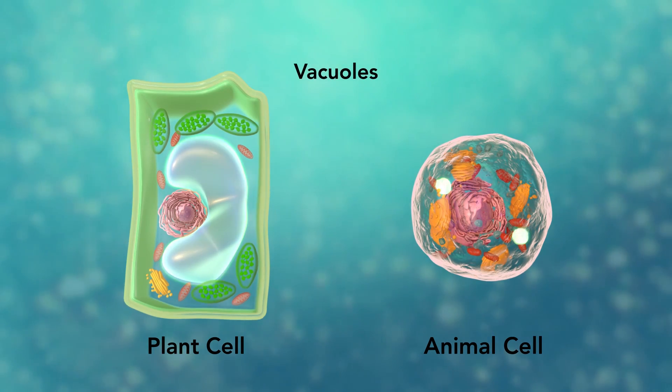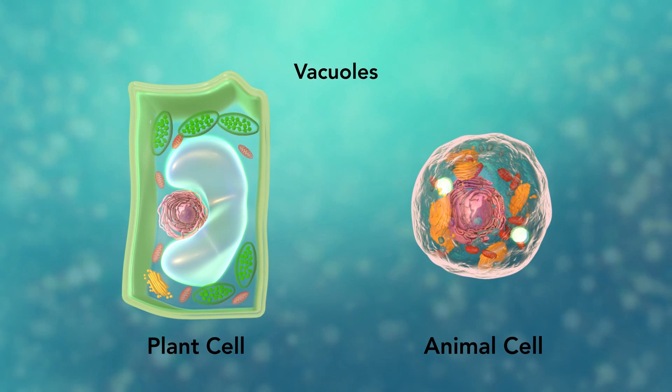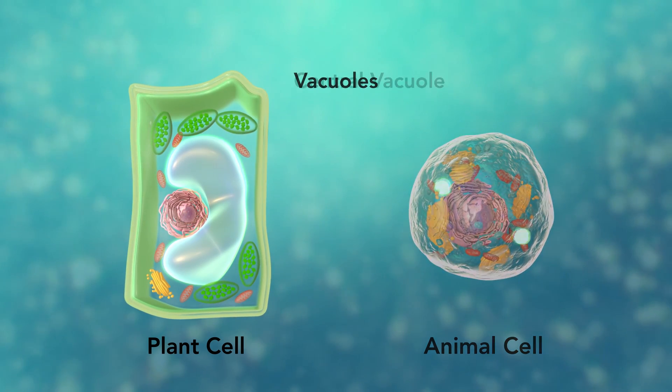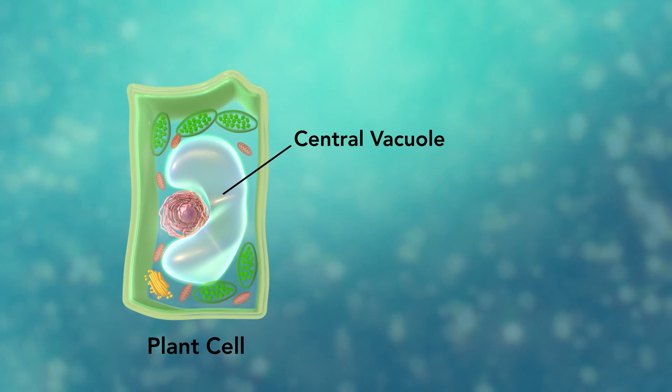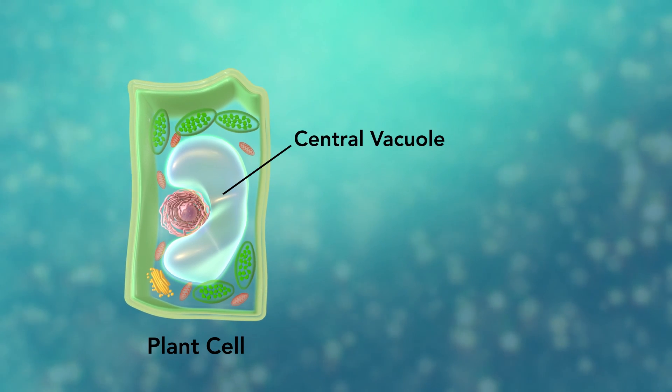Vacuoles are sac-like structures that store different materials. Here, in this plant cell, the central vacuole stores water.